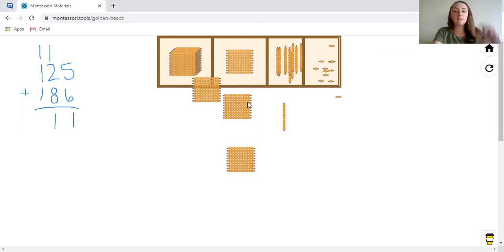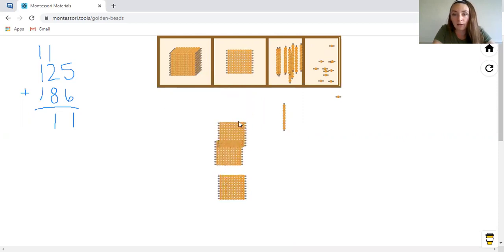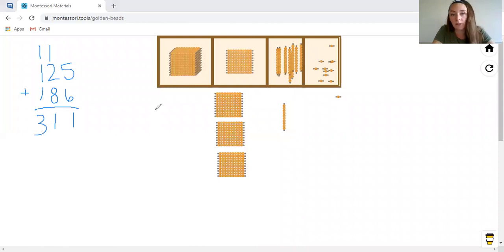So the last step in our problem is we're going to add one plus one plus one gives us three. So we have 311: three hundred squares, one 10, and one unit bead.